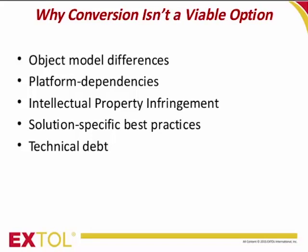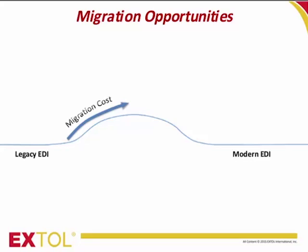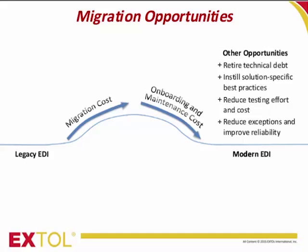Let's get back to migration and look at where the payoff is. This is a simple diagram representing the traditional view of migration — mainly a cost you need to get past in order to realize the benefits of a modern EDI solution. The main benefit is that migration produces new EDI configurations, new assets like business processes and maps, that can greatly reduce the time and cost of onboarding new partners, particularly if you reuse them, and at the same time improve maintainability and other aspects of your system.